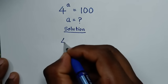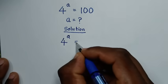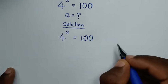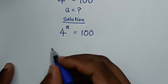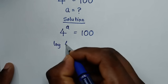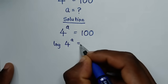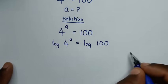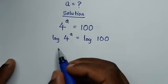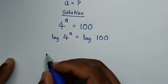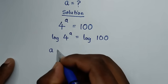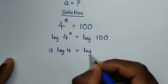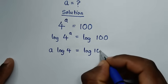From the problem, 4 power of a is equal to 100. In the first step we'll apply log on both sides. So it will be log of 4 power of a is equal to log of 100. Then this power of a will move to the base, so it will be a times log of 4 is equal to log of 100.